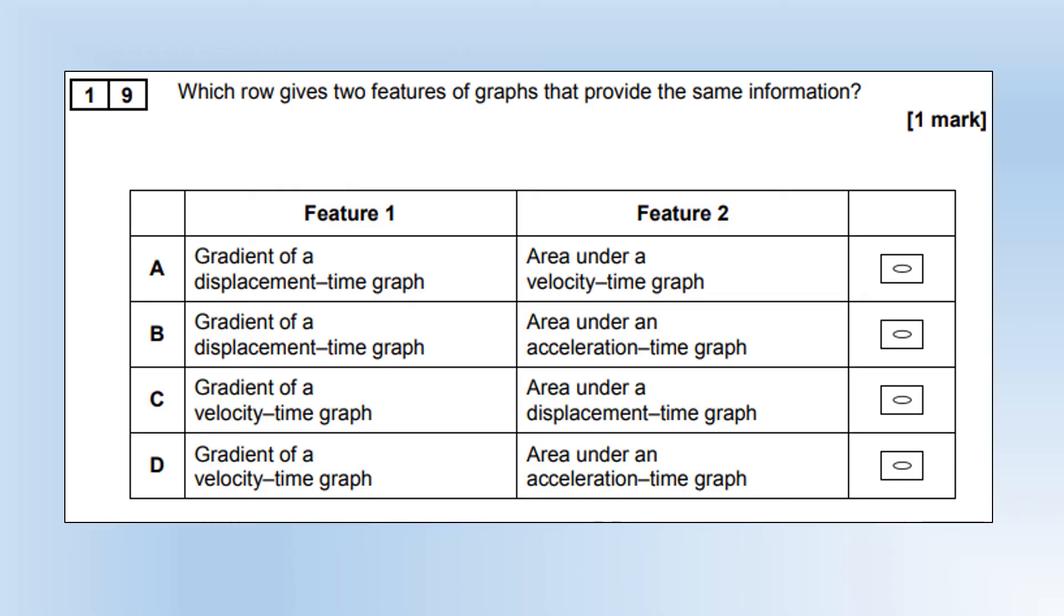Which row gives two features of graphs that provide the same information? The gradient of a displacement time graph is velocity. The area under a velocity time graph is displacement. Gradient of displacement time graph is velocity. Area under an acceleration time graph is the change in velocity of the object. Not strictly the same, but I think that's the one they're going for. Gradient of velocity time is acceleration. Area under a displacement time has a special name, but we don't need to worry about it. Area under acceleration time graph is change in velocity. So it's going to be B, that's the closest to being correct.